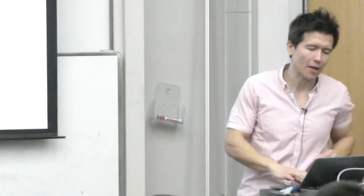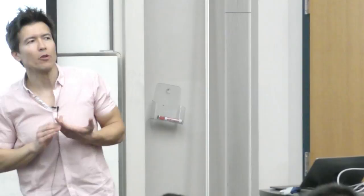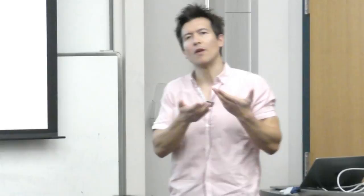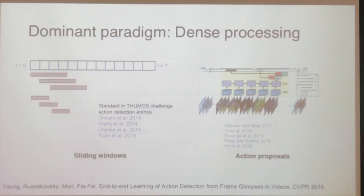Prior to our work, there was a dominant paradigm of dense processing — scanning through the video in a sliding window fashion, trying an action detector at one point in time, sliding it over, trying it at another. Or you could do action proposals: very much analogous to region proposals in object detection, proposing potential places where actions could take place and analyzing each of those to see if it's a running or talking action.